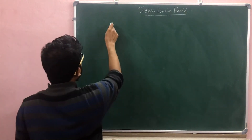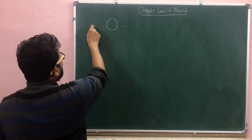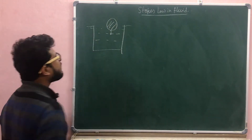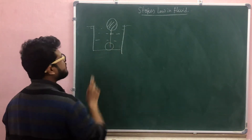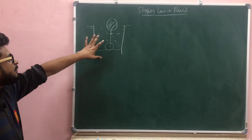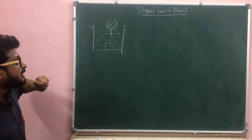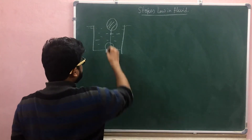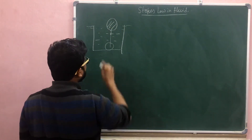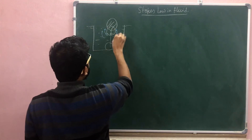Stokes Law describes the retarding force on a body moving through a fluid. The law shows the relationship between forces including the retarding force, which depends on factors like the diameter of the sphere and the density — whether low density or high density — as seen in the surface retarding force.